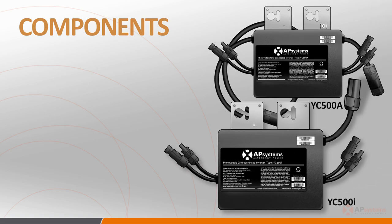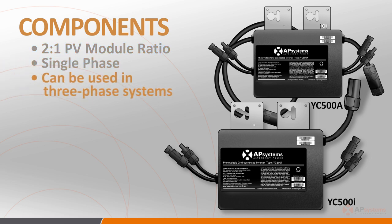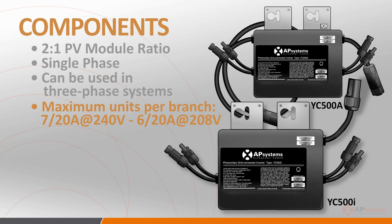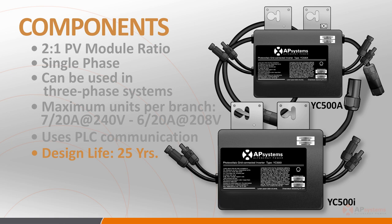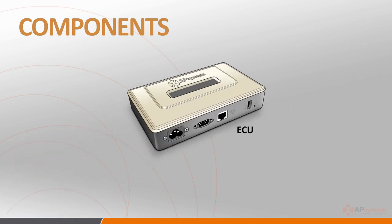The AP Systems YC500 functions as two inverters built into a single case. It's a single-phase inverter, but given its architectural flexibility, it can also be used in both 240-120 volt single-phase and 208 volt three-phase applications. The maximum number of units per 120-240 volt 20 amp circuit is seven, or a total of 14 PV modules, and the maximum number of units per a 208 volt 20 amp circuit is six, or a total of 12 PV modules. The YC500 uses the Power Line Communication or PLC protocol to communicate with the ECU, and it has been engineered for a design life of 25 years.